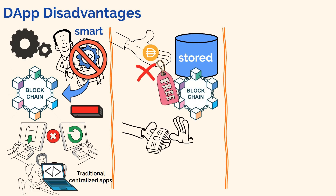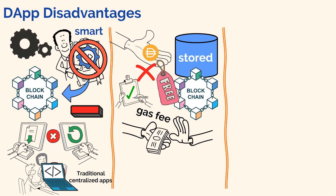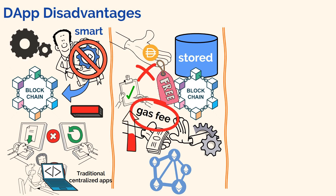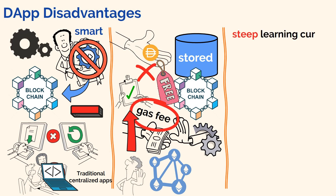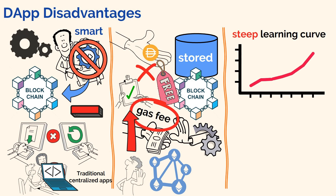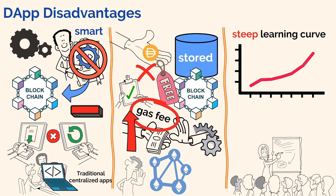Users have to pay what is known as a gas fee for transactions to be validated and recorded on the chain. These fees are basically like a handling fee required by the network the dApp is being run on. For networks such as Ethereum, these fees can be pretty high, which could in turn lead to a less than desirable uptake of the technology. A final disadvantage is the pretty steep learning curve that comes with using dApps and understanding blockchain technology at the moment. It's not as straightforward as using a regular app, which could make widespread adoption slower.